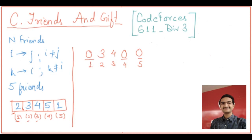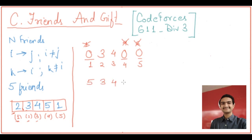The conditions are: one should not give a gift to himself — so here one cannot be at position one, four cannot be at position four, and five cannot be at position five. We have to find any valid solution, not necessarily the original sequence. For example, filling in five, three, four, one, and two would also satisfy the given constraints.